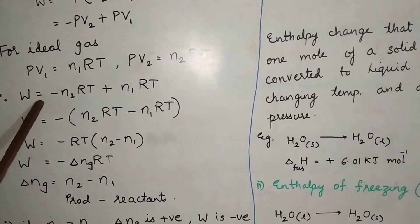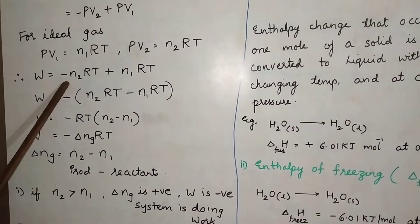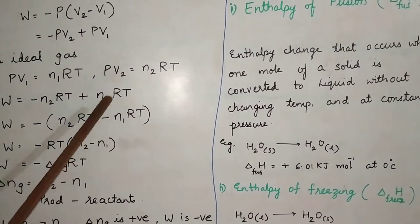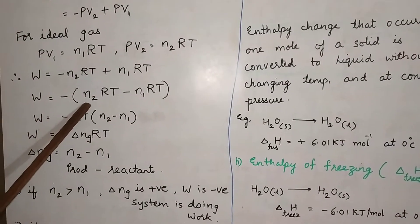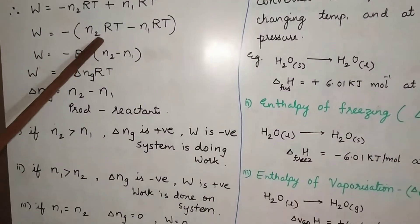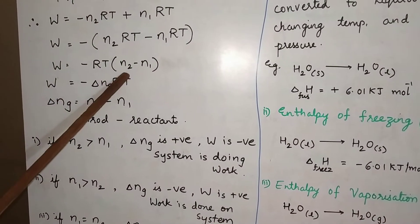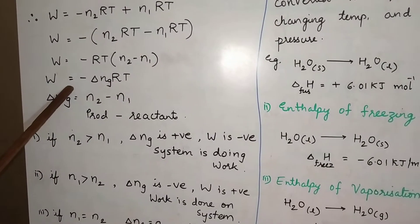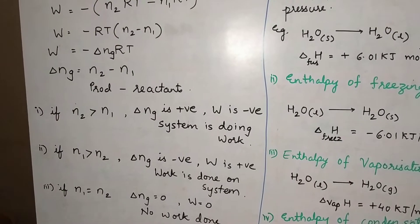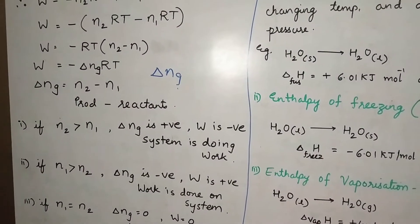Therefore W is equal to minus N2RT. Substituting P·V2 as N2RT and P·V1 as N1RT, this becomes minus N2RT plus N1RT. Taking RT common, W is equal to minus RT into (N2 minus N1), and N2 minus N1 becomes delta N. So W is equal to minus delta Ng RT, where the subscript G indicates gas, because we are using the general gas equation for gaseous phase reactions.